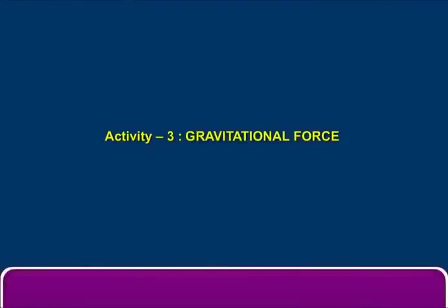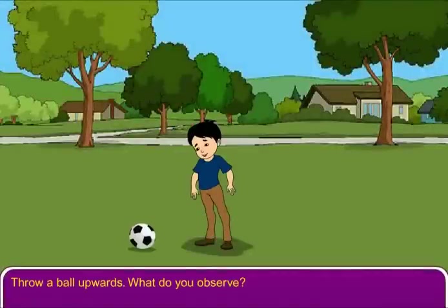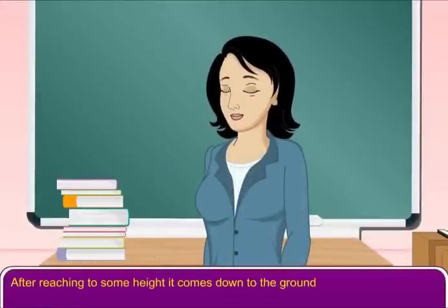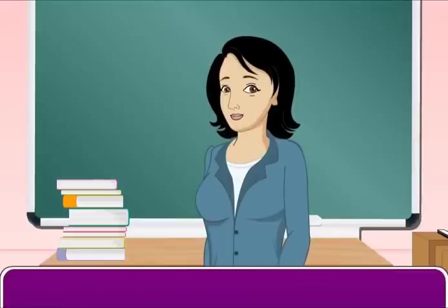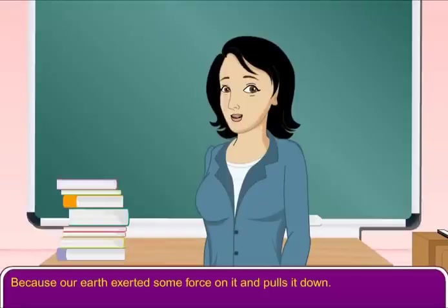Activity 3. Throw a ball upwards. What do you observe? After reaching some height, it comes down to the ground. Why? Because our earth exerted some force on it and pulls it down. This pull of the earth is called gravitational force.